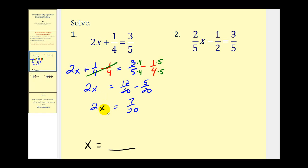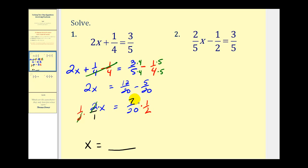We have to be a little careful here. The 2 is attached by multiplication, so the opposite of multiplying by 2 would be dividing by 2. However, since this is in fraction form, instead of dividing by 2, it's helpful to multiply by the reciprocal. Dividing by 2/1 is the same as multiplying by 1/2. On the left, the 2 simplifies out, leaving us with x. On the right, nothing simplifies, so we multiply across the top: 7/20 times 1/2 gives us x = 7/40. That is our solution.